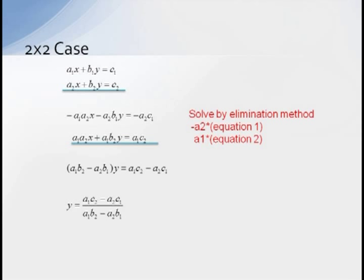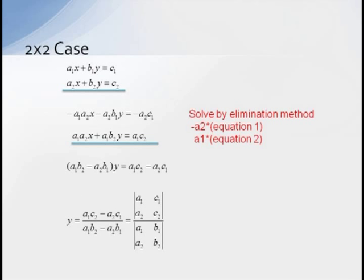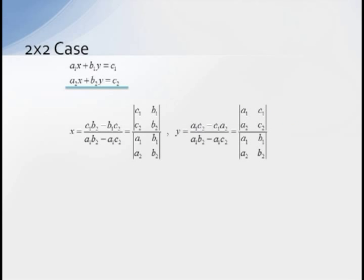Notice how the numerator and denominator both look exactly like a two by two determinant. And in fact, we can rewrite this fraction as a determinant of A1C1A2C2 divided by the determinant A1B1A2B2. We can make a similar argument by eliminating the Y term and you would see that our solution for X is the determinant of C1B1C2B2 also divided by the determinant of A1B1A2B2.